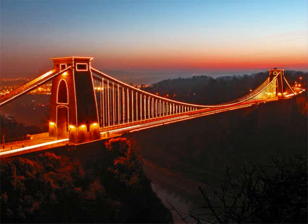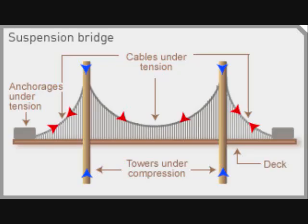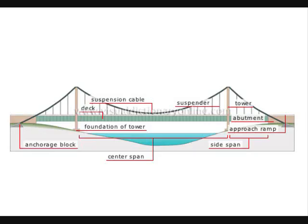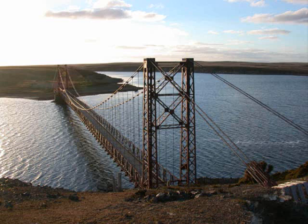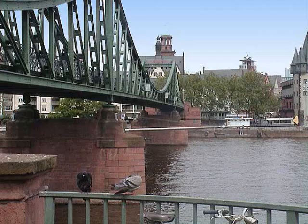Suspension bridges are suspended from cables. This type of bridge has cables that hang from towers to carry the weight of the deck. The towers are attached to caissons and cofferdams that are implanted deep into the floor of a lake or river. The load applied to the bridge transforms into tension forces in the cables, which is why suspension cables must be anchored at each end of the bridge.